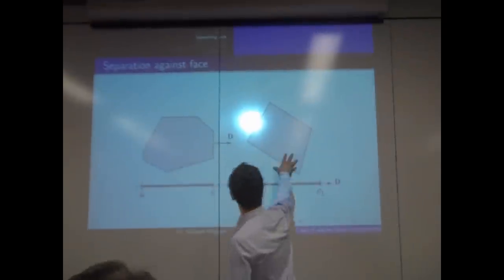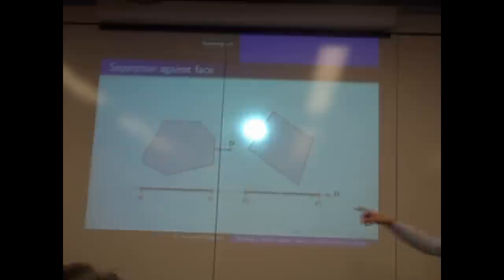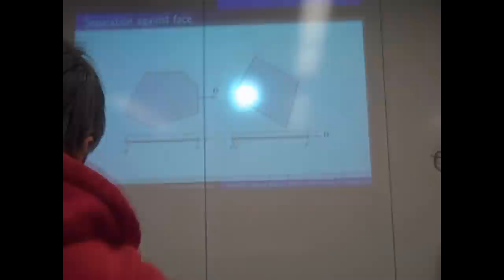We have two convex shapes in 2D or 3D, and we look for an axis along which the projections of the first shape and the second shape do not intercept. If you can find just one such axis, then you can absolutely certainly declare that the two convex shapes do not intersect.